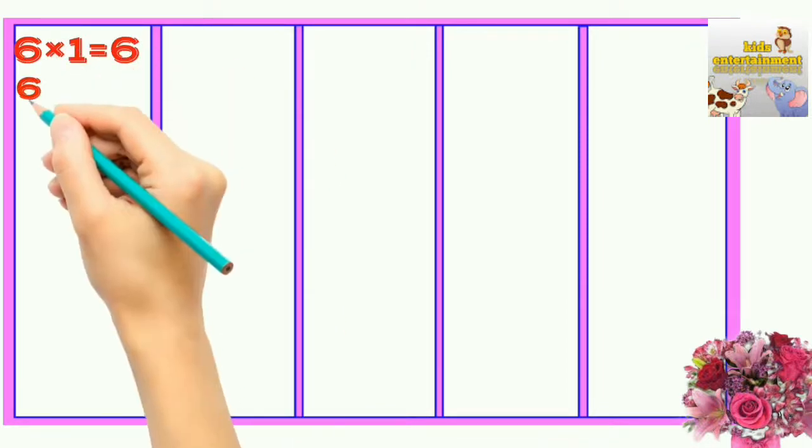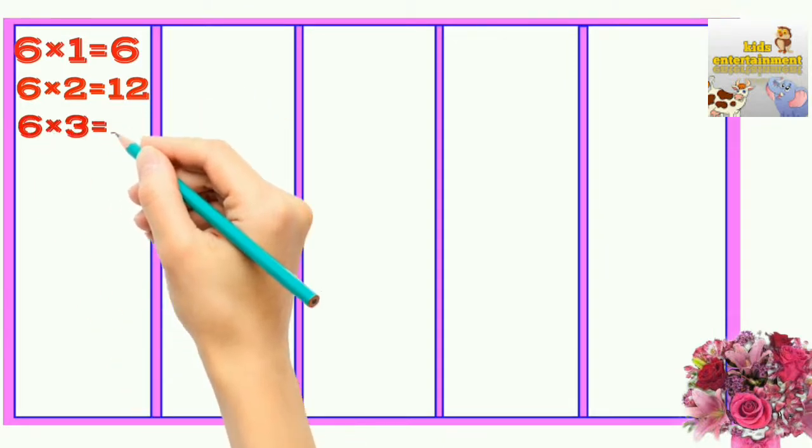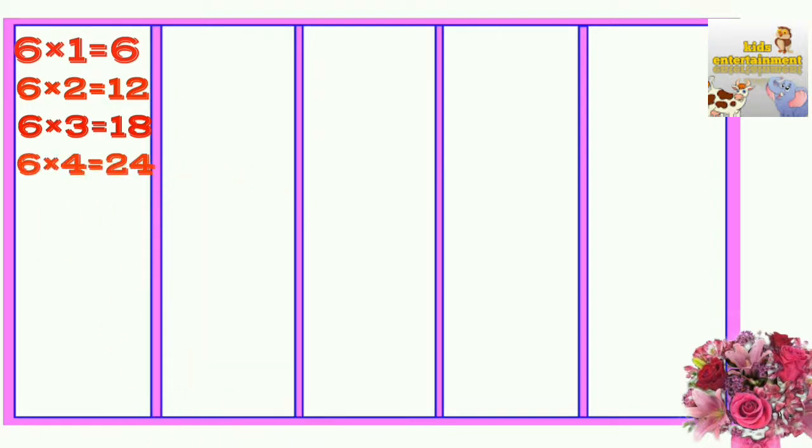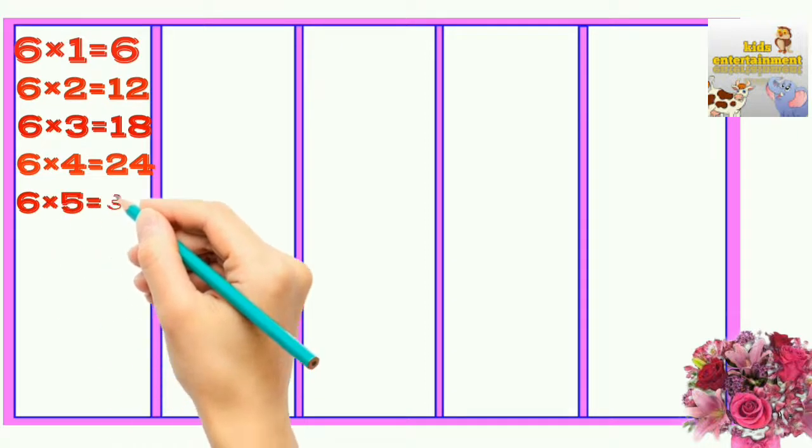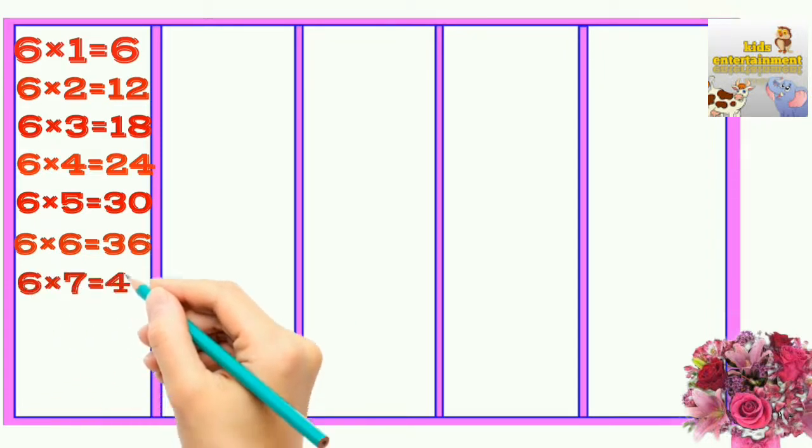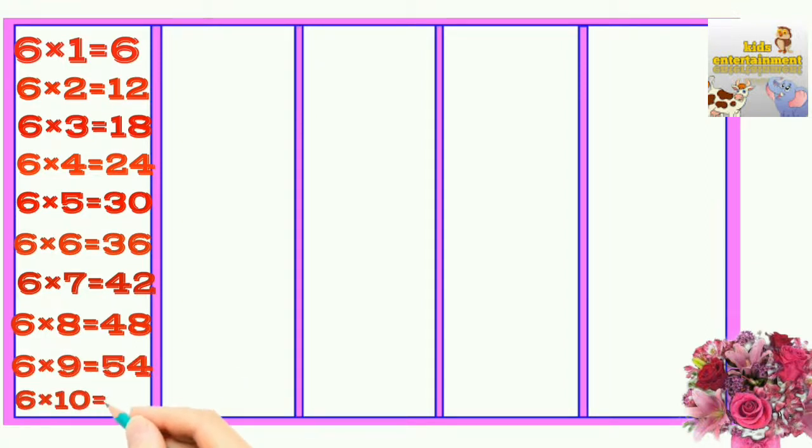6×1=6, 6×2=12, 6×3=18, 6×4=24, 6×5=30, 6×6=36, 6×7=42, 6×8=48, 6×9=54, 6×10=60.